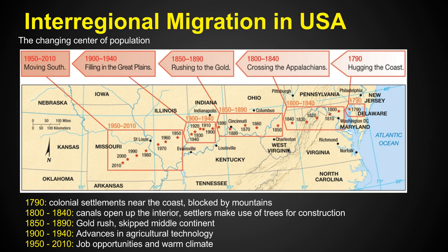Then in the 1850s through the 1890s, something happens — it's the Gold Rush in California. What people did is they didn't settle in the interior; they skipped the middle and went all the way to California, which still brought the center of population further west, even though they skipped the middle. The other reason they skipped the middle is that farmland wasn't accessible there. They didn't see the topsoil as fertile, didn't know irrigation techniques, and didn't have the plow to get beneath the Great Plains topsoil. They actually called this area the Great American Desert.